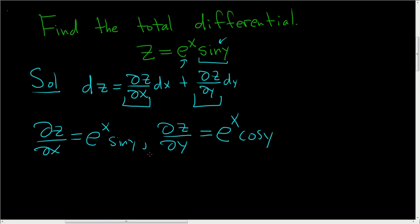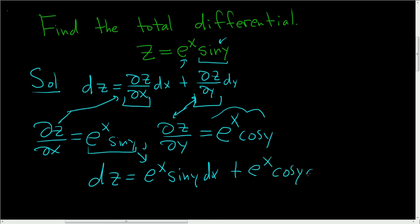To finish, we'll take ∂z/∂x and plug it in here, and take ∂z/∂y and plug it in here. So dz is e to the x sine y dx, that was ∂z/∂x, plus ∂z/∂y, which is e to the x cosine y dy.